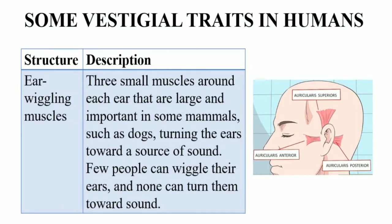First of all, ear wiggling muscles — these are also known as auriculars, and are three small muscles present around each ear. These are reduced in humans. As shown in the figure, the three muscles are auricularis anterior, posterior, and superior. In other mammals, for example dogs, these ear wiggling muscles are larger and are used for turning the ears towards a sound source.